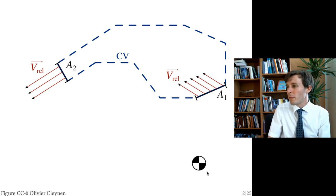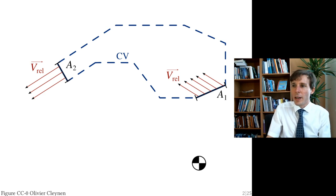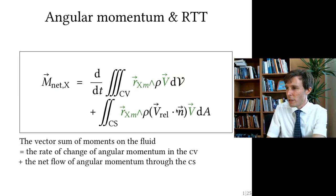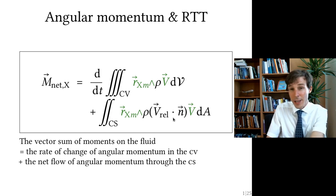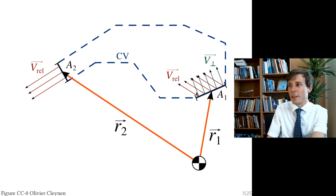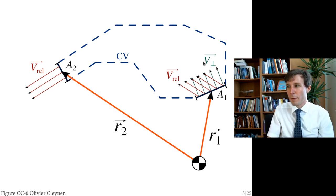Say the flow comes in at one location and leaves at another. We look at the orthogonal component of velocity — specifically the relative velocity dotted with the outward normal vector n, which gives the component of velocity perpendicular to the inlet or outlet.